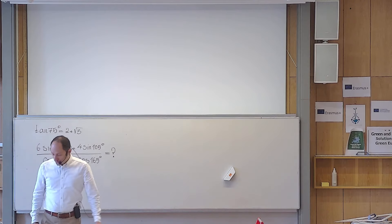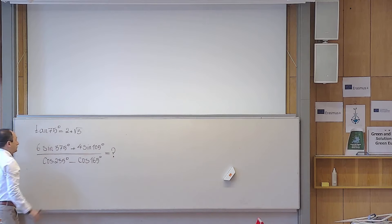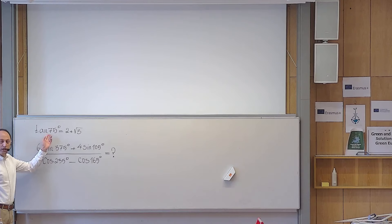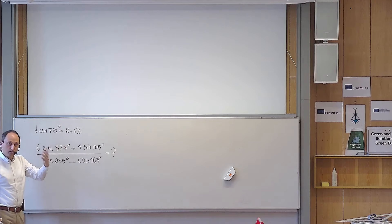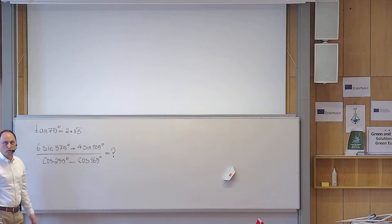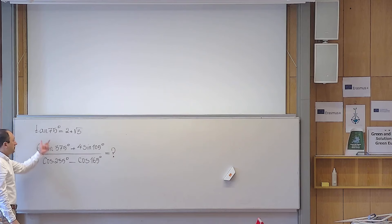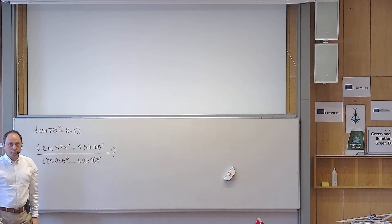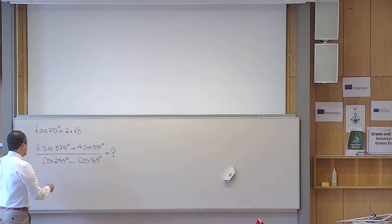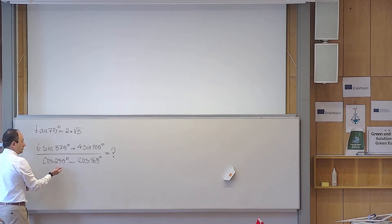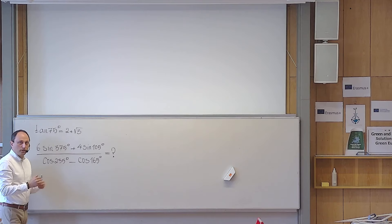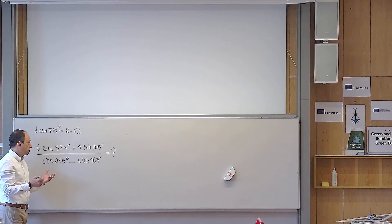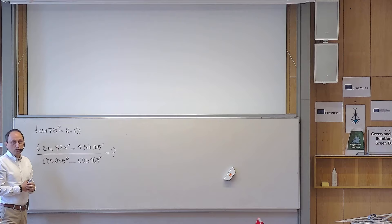So now let us try to solve the problem. They have given us information about tangent 75 degrees. You can calculate this number exactly if you know the addition formula for tangent, or even the addition formula for sine and cosine. Here, the emphasis is not finding tangent of 75 degrees — this number is granted. Based on this, you are supposed to find the exact value of this fraction. The angles here are none of them 75 degrees, so it gives you the hint: relate all these angles to sine, cosine, tangent of 75 degrees so that we have something to use.